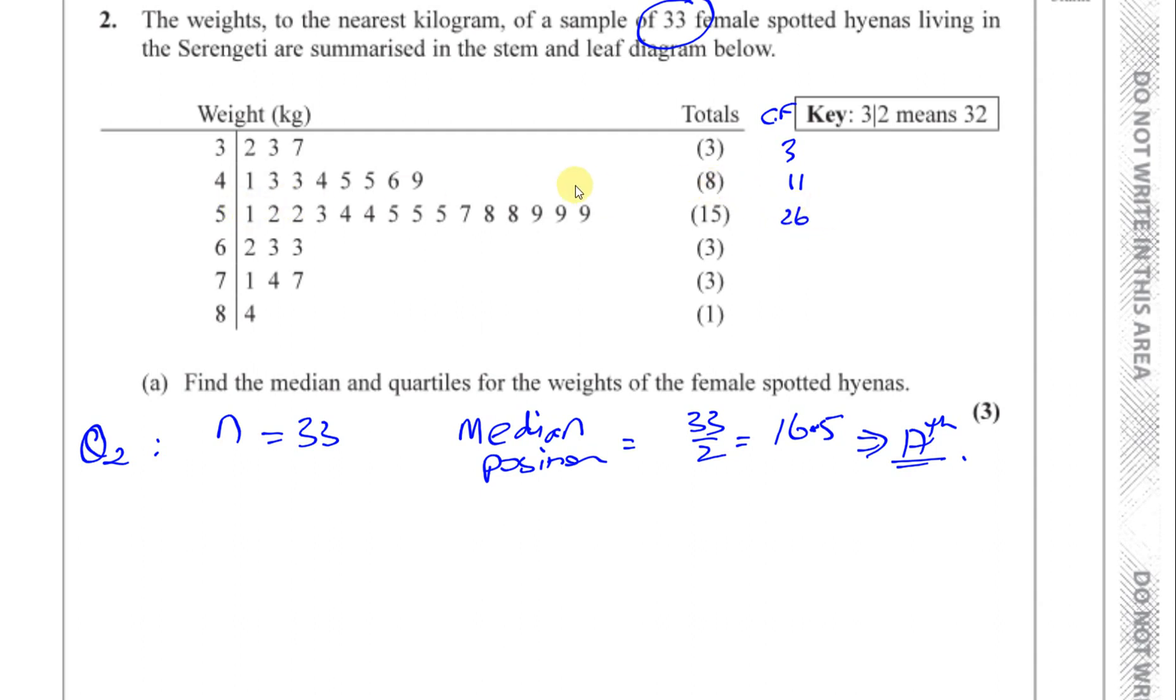And then you've got another 15 terms, so you're going to get to the 26th term. So we see the 11th term is, by the time you got to here, you got to the 11th term. So this is the 12th, 13th, 14th, 15th, 16th, 17th. So the 17th term is 54. Okay, so Q2 is equal to 54.